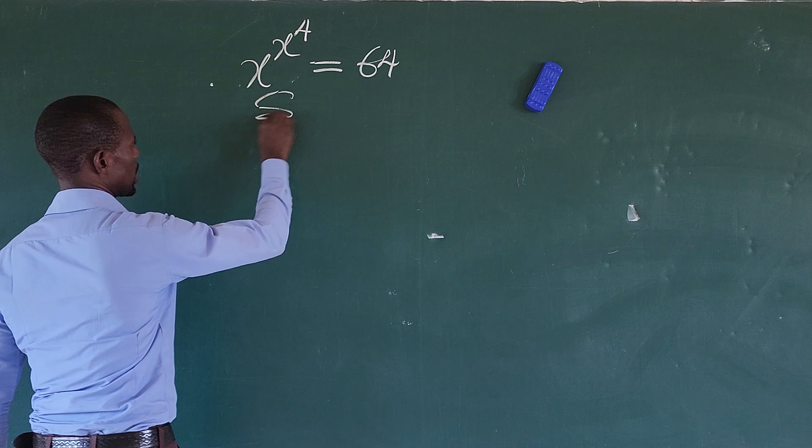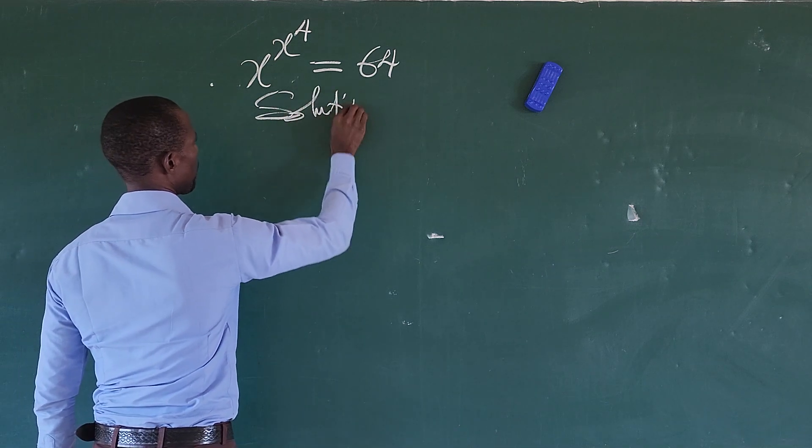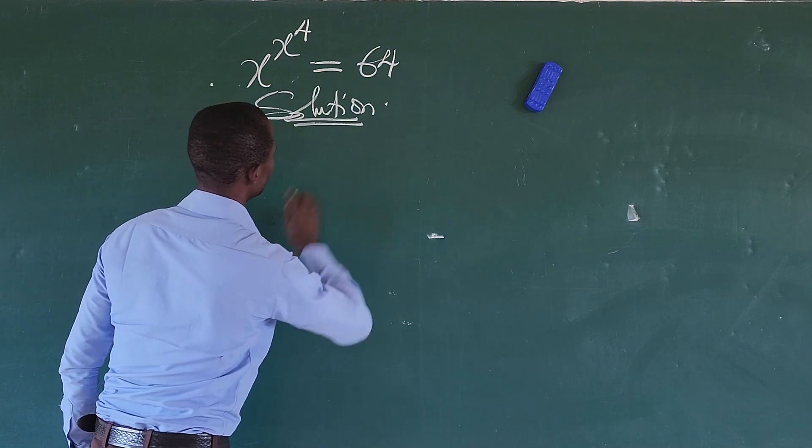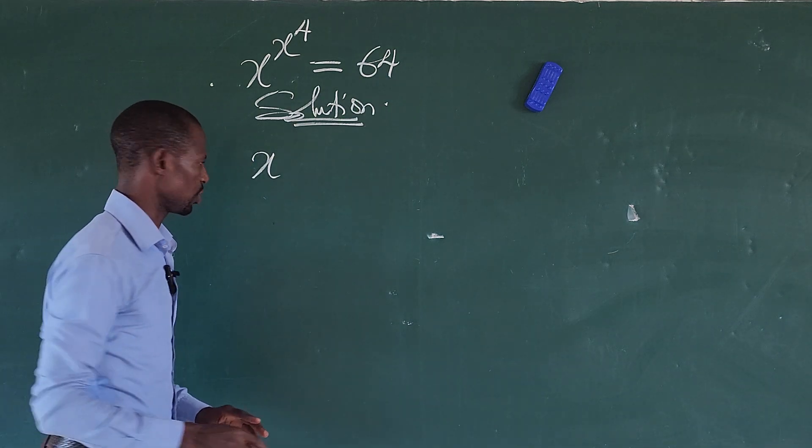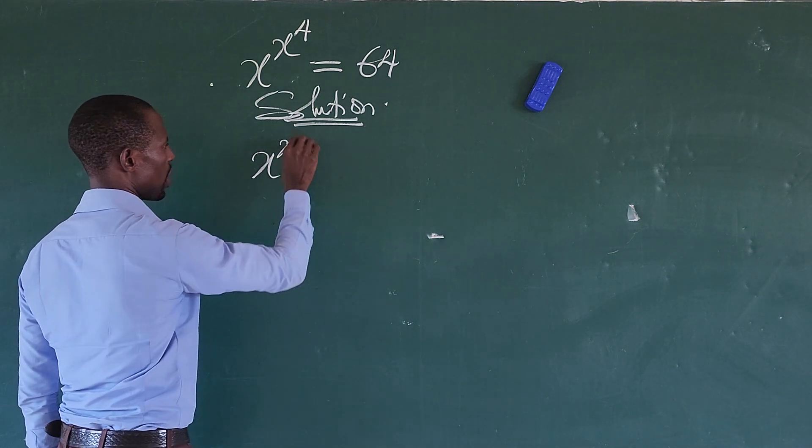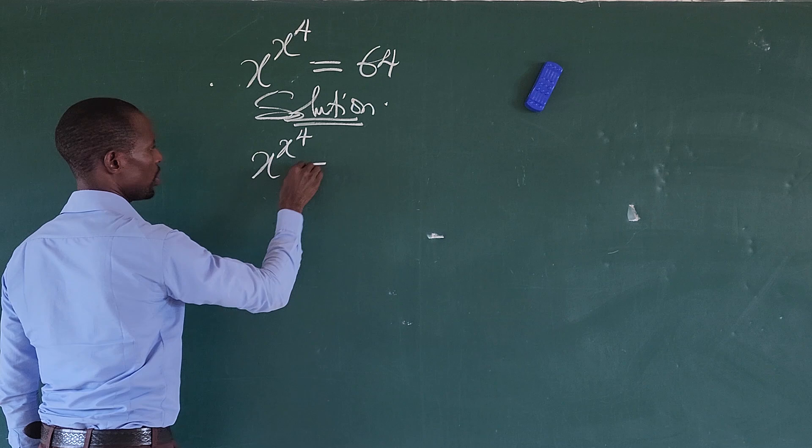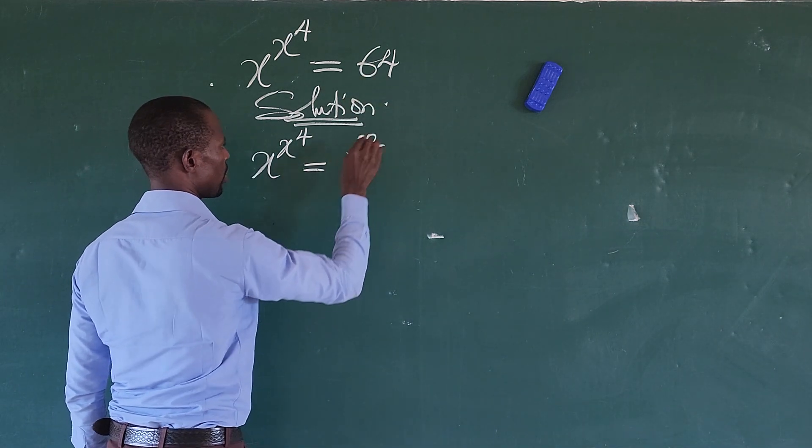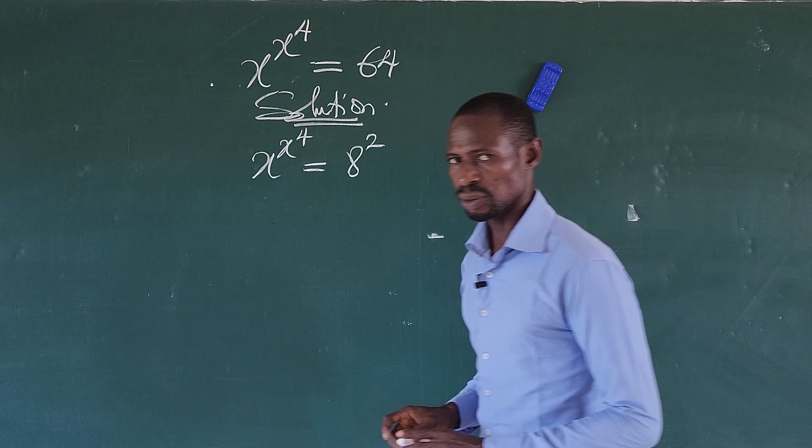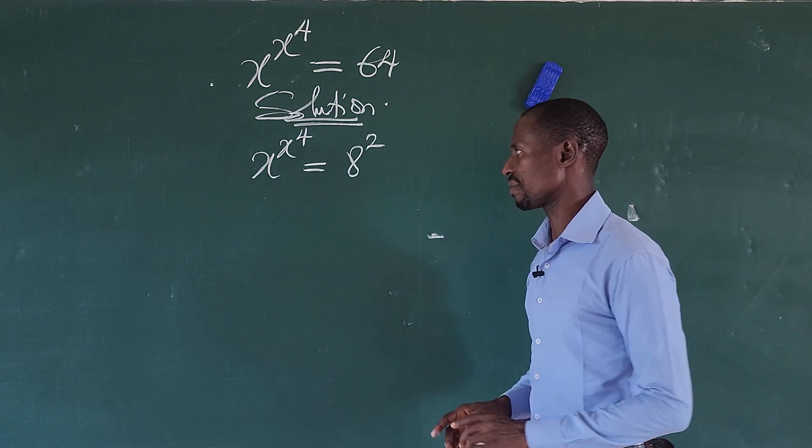So here we take a solution. Alright, so the question, we want to rewrite the right hand side of the equation. We have x to the power of x to the power of 4 equal to 64, which can be written as 8 to the power of 2. So 8 times 8 will give us 64, right?